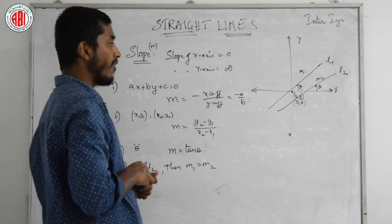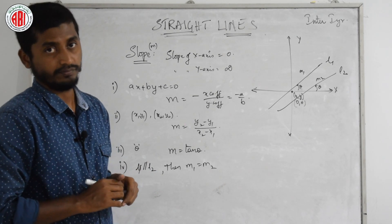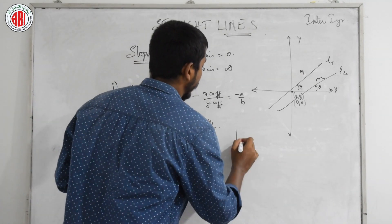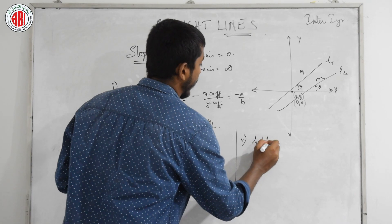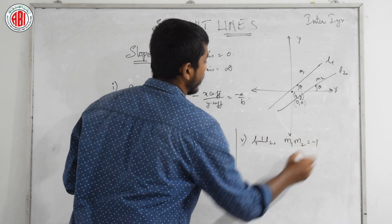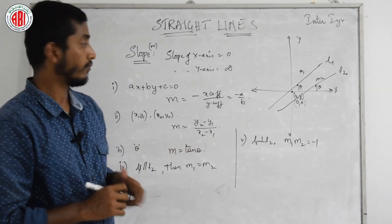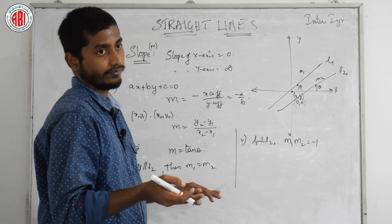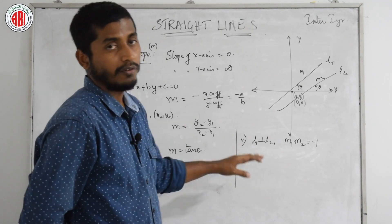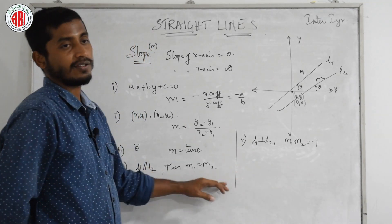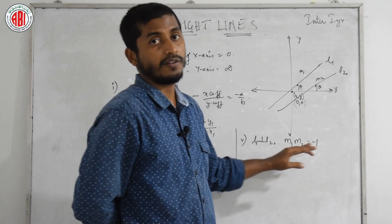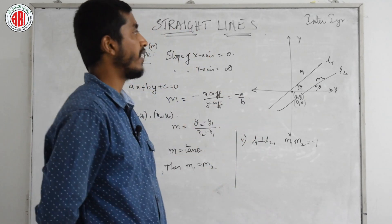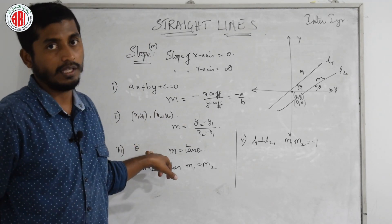What happens if two lines are perpendicular? If two lines are perpendicular, then the product of their slopes is equal to −1. Just remember this for now — we will discuss why it is −1 based on tan θ in future classes. So: if two lines are parallel, their slopes are equal; if two lines are perpendicular, the product of their slopes equals −1.